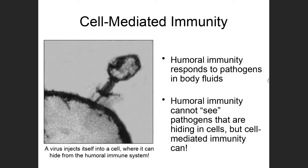With this folder, we're going to get into talking about cell-mediated immunity. With the last folder, we looked at humoral immunity, which responds to pathogens that are in body fluids — things like blood and lymph. Certain pathogens, like viruses and some bacteria, are able to actually insert themselves into cells of the body. Once they're inside those cells, they're protected by the plasma membrane from the humoral immune system.